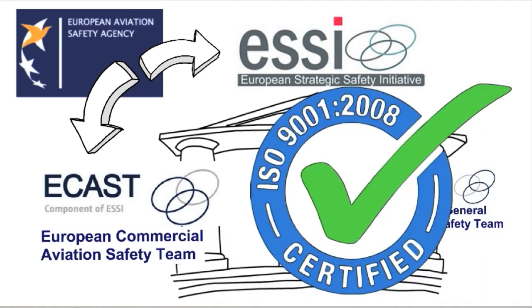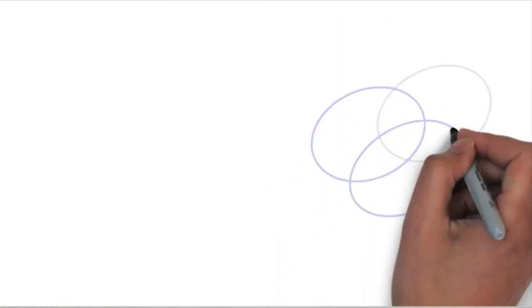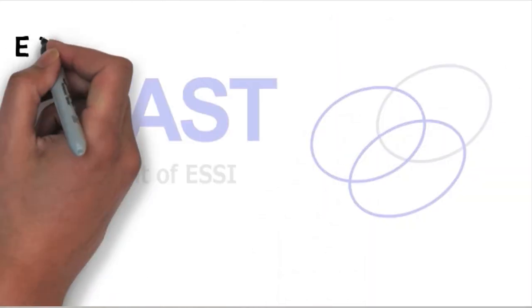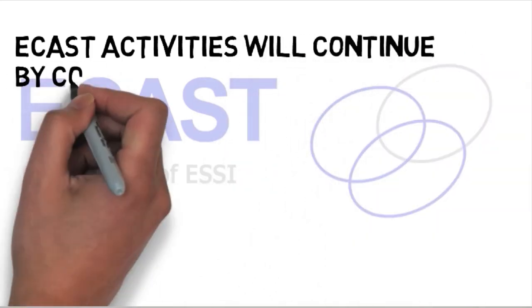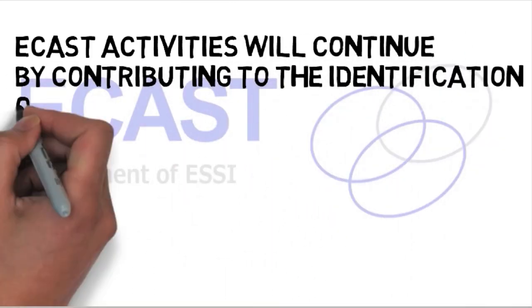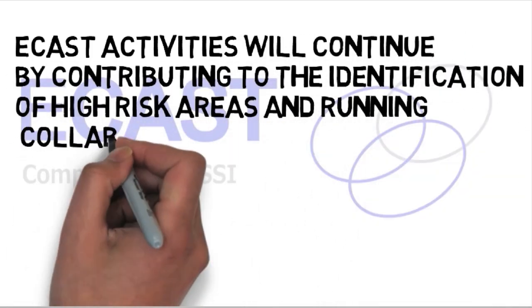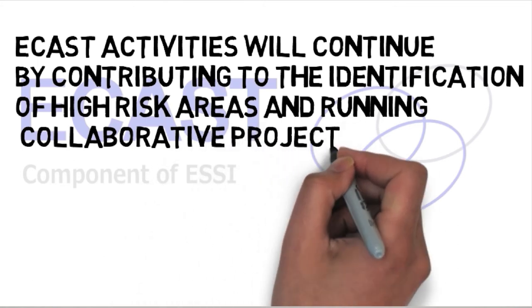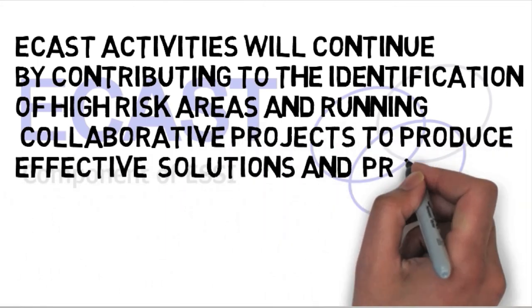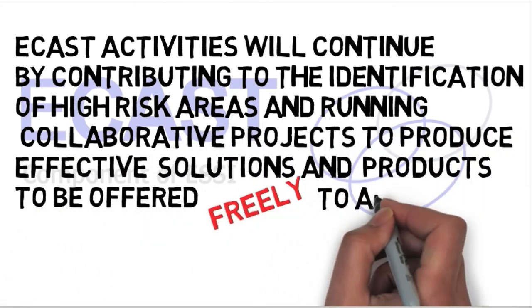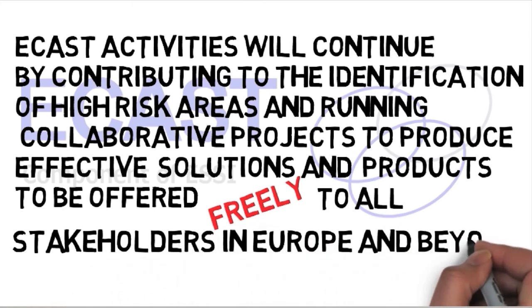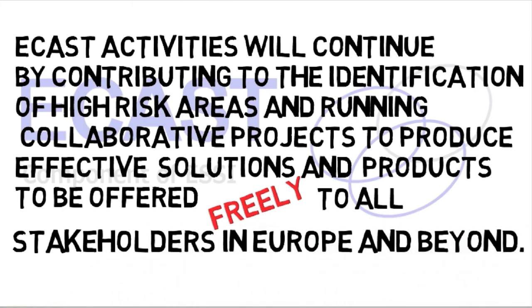Administered by the agency, ECAST and the other ESSI teams have been managed in compliance with ISO 9001-2008 since 2010. A survey was conducted in 2012 to get stakeholder feedback on the ESSI publications, and the results are published on the ECAST website. ECAST activities will continue by contributing to the identification of high-risk areas and running collaborative projects to produce effective solutions and products, offered freely to all stakeholders in Europe and beyond.